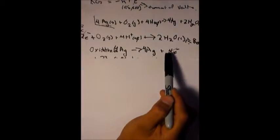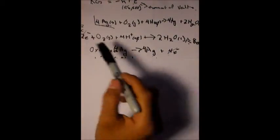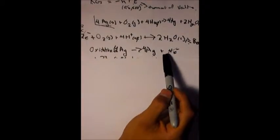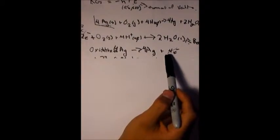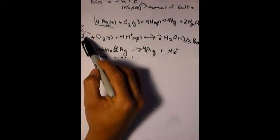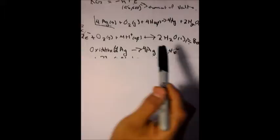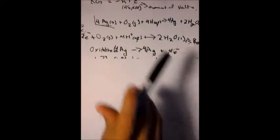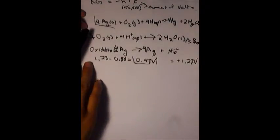Since we have a 2 on the first equation and a 4 on this one, we will have to multiply by 2 on this part to be able to cancel out and get the regular equation. Then you will have to look at the reduction potential list, which is given most of the time or if not it will be in your book.